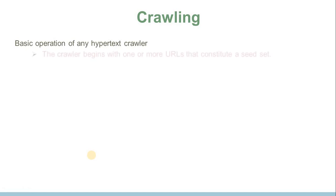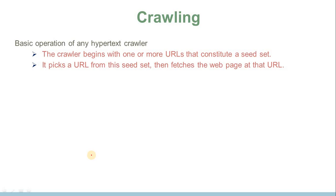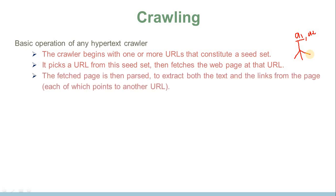Now let's see the basic operations included in crawling. The basic operation of any hypertext crawler: the crawler begins with one or more URLs that constitute a seed set. The seed set is the starting point from where the process begins — it can be one URL or more than one. It then picks a URL from this seed set and fetches the web page at that URL, for example a page A1.